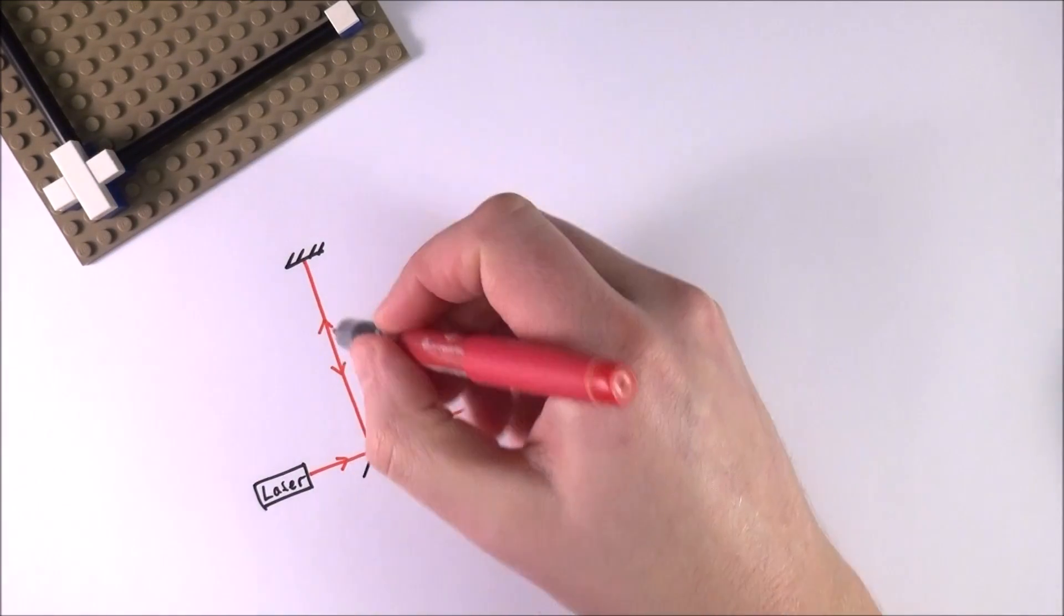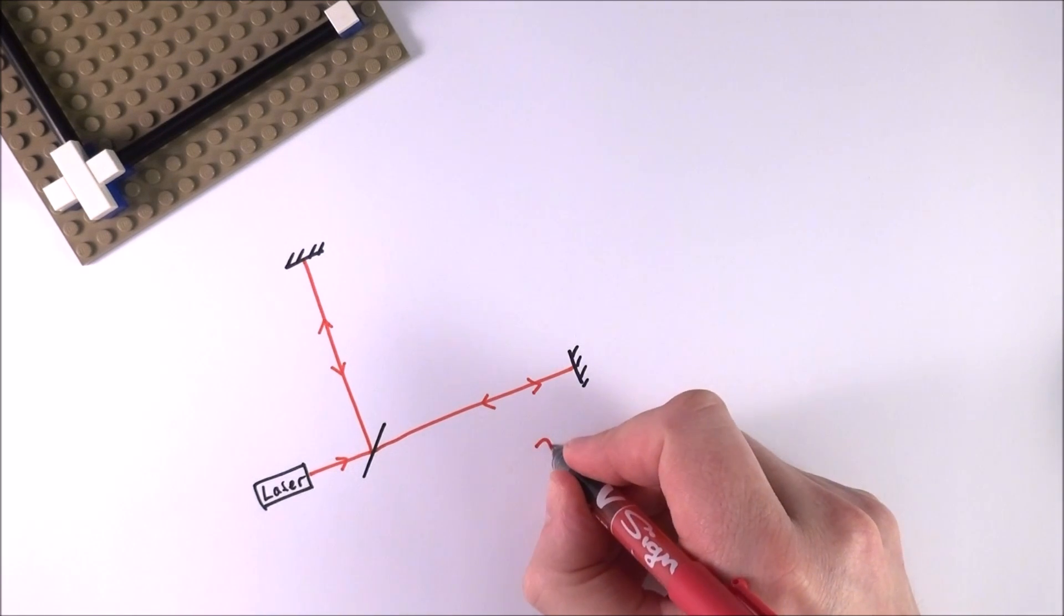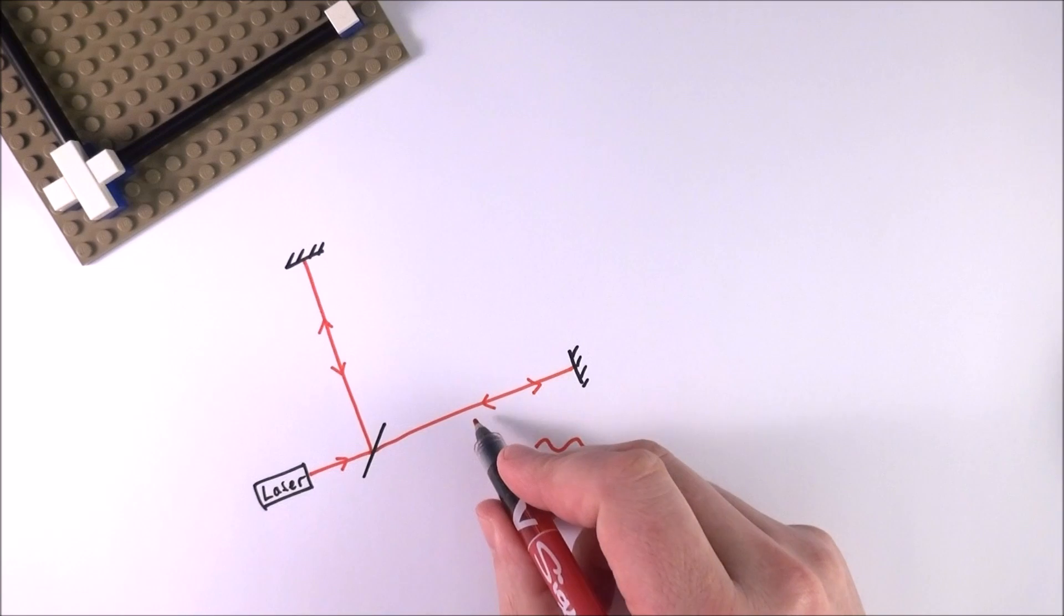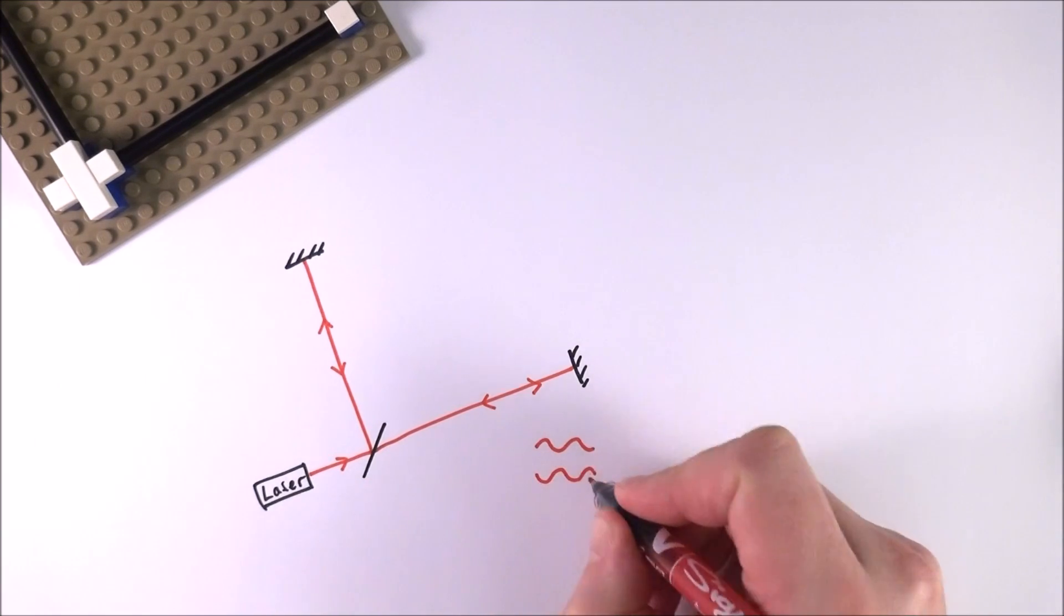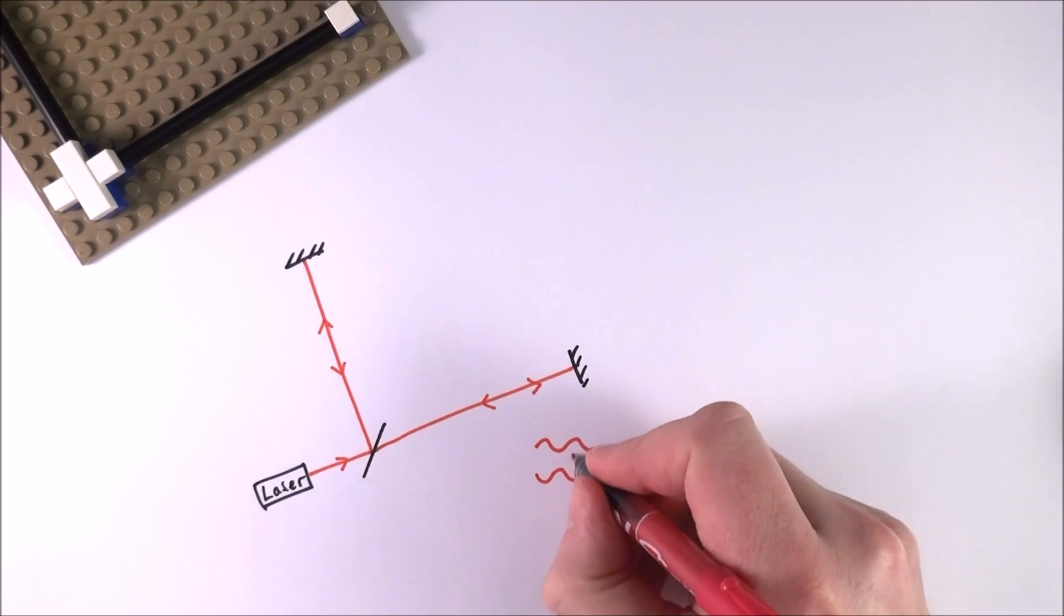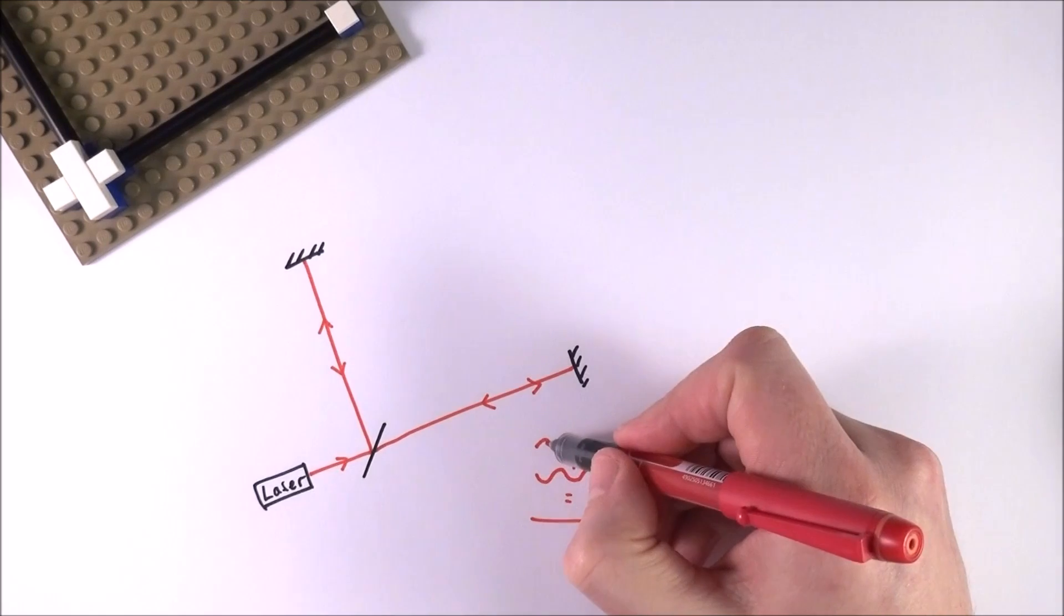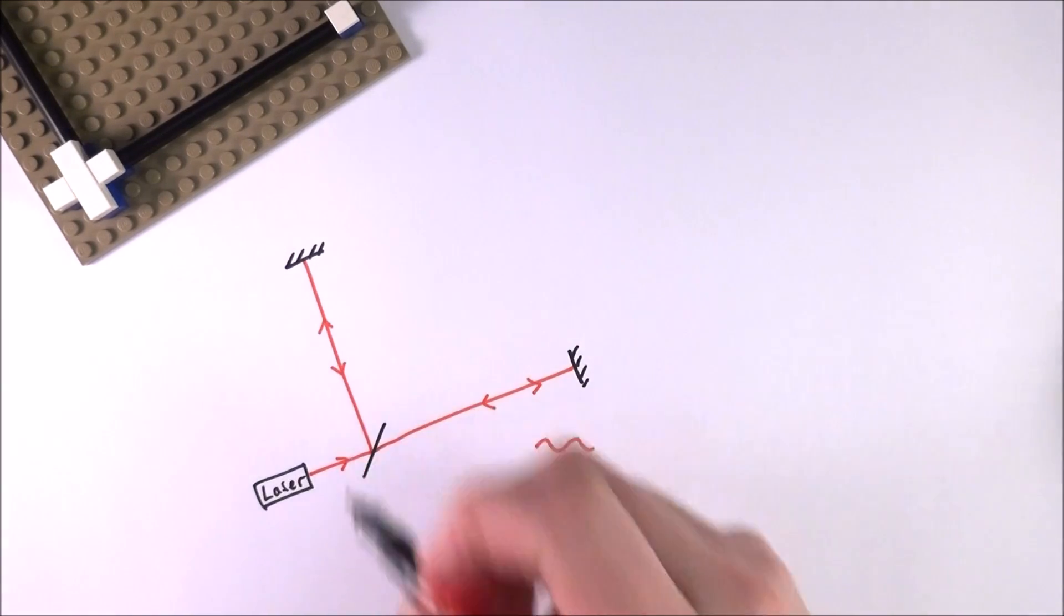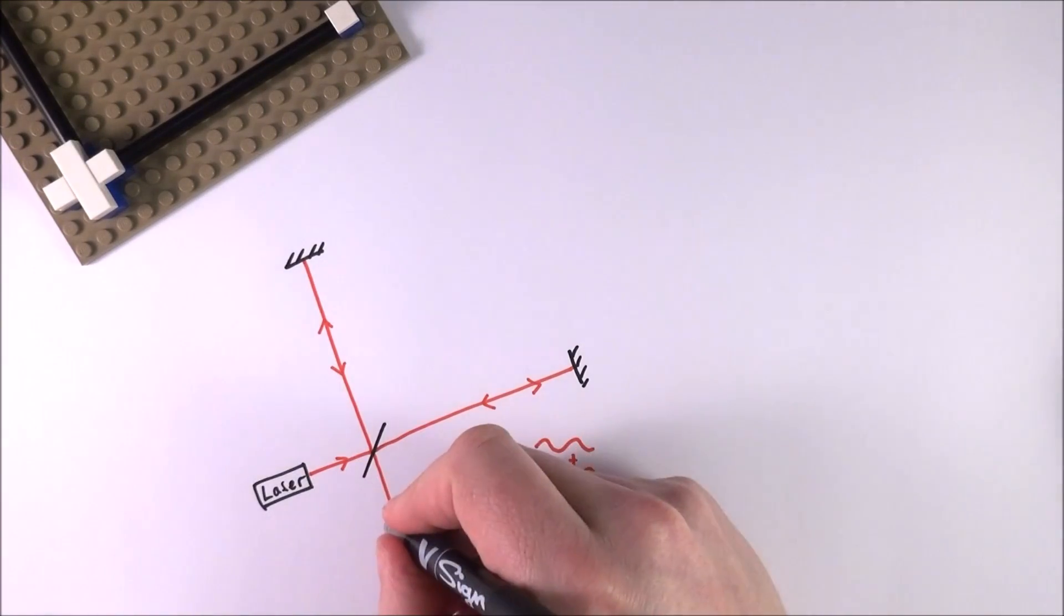When the two rays of light are completely in antiphase, the wavelength of one ray cancels with the wavelength of the other. This ray of light plus this one equal no light at all. Effectively, the top of the wave cancels with the bottom, and we don't see any light. This ray basically passes through the mirror to our detector.